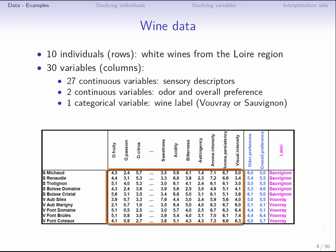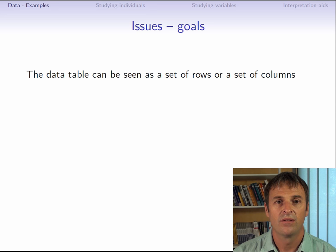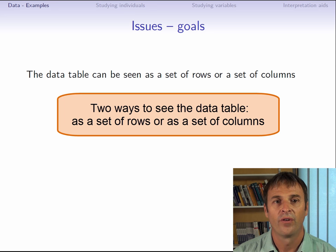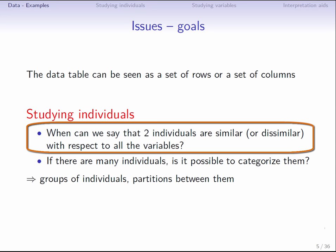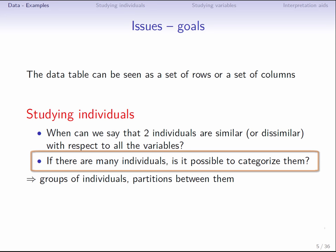How can we study this data table? This data table can be studied in different ways. We can see it as a set of rows and try to look for differences between rows. We can also look at the data table as a set of columns and investigate the similarities or links between columns. To study individuals, that is the rows, we need to know when two individuals are close and when they are different from the point of view of all the variables. If there are many individuals, which are the most similar and the most dissimilar? Are there any groups of individuals which are homogeneous in terms of their similarity?